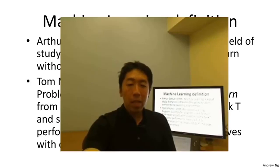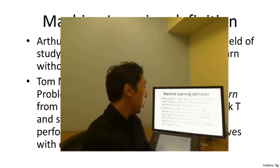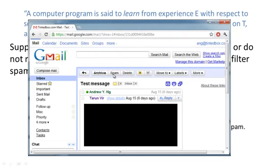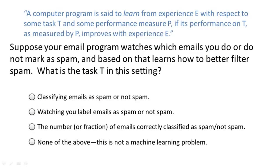Throughout these videos, besides me trying to teach you stuff, I'll occasionally ask you a question to make sure you understand the content. Here's one. On top is the definition of machine learning by Tom Mitchell. Let's say your email program watches which emails you do or do not flag as spam — you might click a spam button to report some email as spam but not other emails — and based on which emails you mark as spam, your email program learns better how to filter spam email. What is the task T in this setting? In a few seconds the video will pause, and you can use your mouse to select one of these four radio buttons to let me know which of these four you think is the right answer.